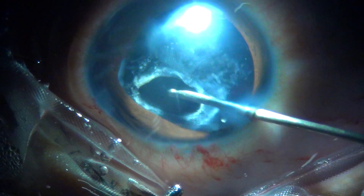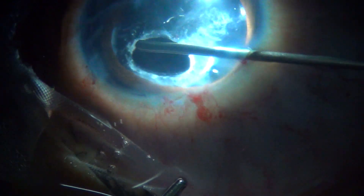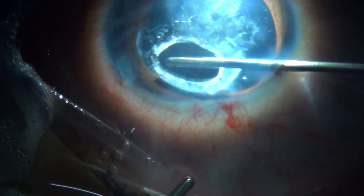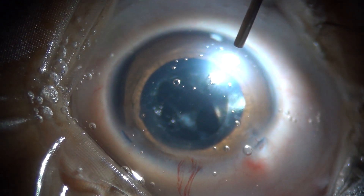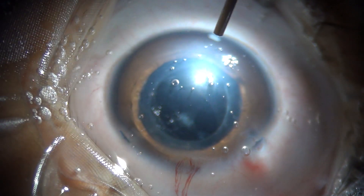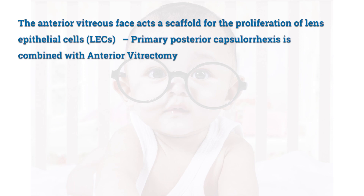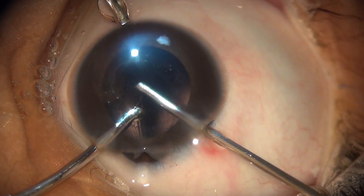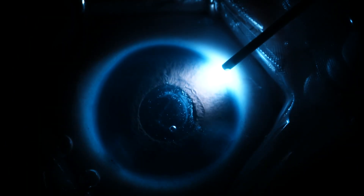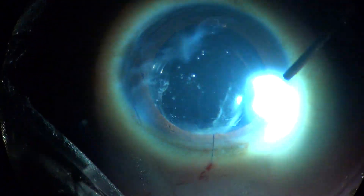If the posterior capsule is left intact, there are more chances of developing significant posterior capsular opacification. The opening of primary posterior capsulorexis should be smaller than the anterior capsulotomy but large enough to leave a clear visual axis. The anterior vitreous face acts as a scaffold for proliferation of lens epithelial cells, and hence primary posterior capsulorexis is combined with anterior vitrectomy. Endolite provides better visualisation during these steps.